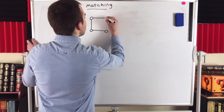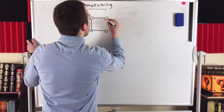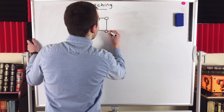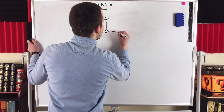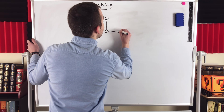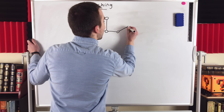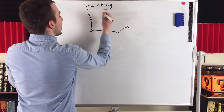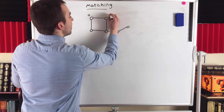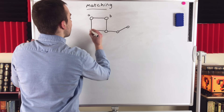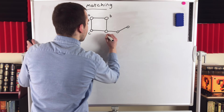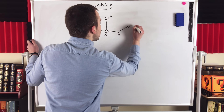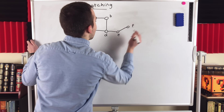Matchings are also sometimes called independent edge sets, which might give you a good idea what a matching is. Here is our graph. Let's go ahead and label the vertices A, B, C, D, E, and F.